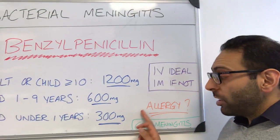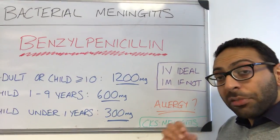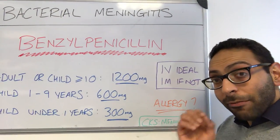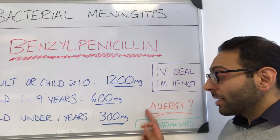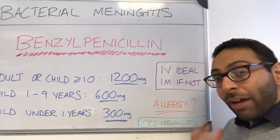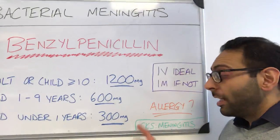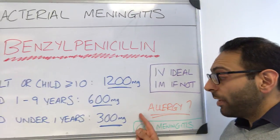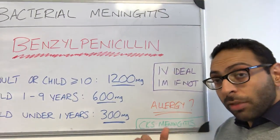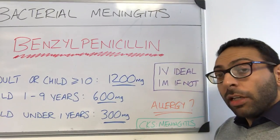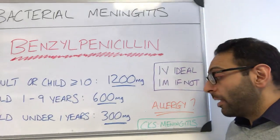Is the patient allergic to penicillin? There has to be a clear history of penicillin anaphylaxis to avoid giving benzoyl penicillin. A history of a rash with penicillin is not enough — it has to be pure anaphylaxis. If someone does have a history of anaphylaxis, then you withhold treatment. There's no substitute that NICE recommend, so you need to get them straight into hospital as quickly as you can.